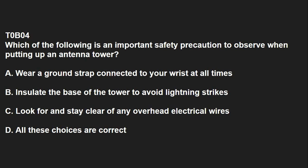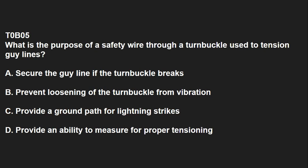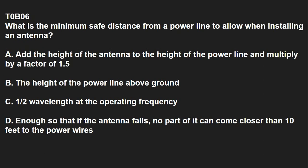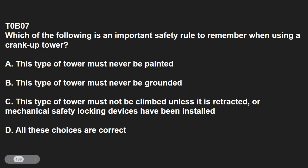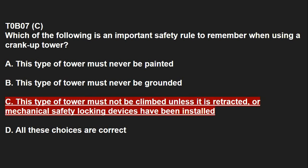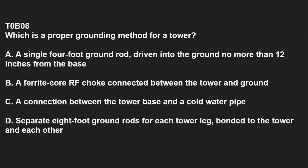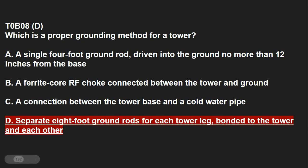T0B04: Which of the following is an important safety precaution to observe when putting up an antenna tower? You should look for and stay clear of any overhead electrical wires. T0B05: What is the purpose of a safety wire through a turnbuckle used to tension guy lines? To prevent loosening of the turnbuckle from vibration. T0B06: What is the minimum safe distance from a power line when installing an antenna? Enough so that if the antenna falls, no part of it can come closer than 10 feet to the power wires. T0B07: Which of the following is an important safety rule when using a crank-up tower? This type of tower must not be climbed unless it is retracted or mechanical safety locking devices have been installed. T0B08: Which is a proper grounding method for a tower? Separate 8-foot ground rods for each tower leg, bonded to the tower and each other.